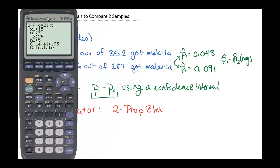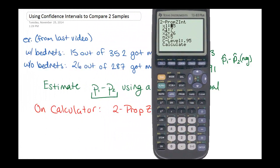So we're entering this information. For our first sample, we have 15 out of 352 and 26 out of 287. The confidence level I didn't specify in this problem here. Let's go ahead and do a confidence level to match our previous example. We'll do a confidence level of 99%. And this would be something specified in the problem.